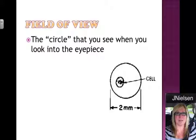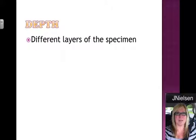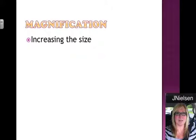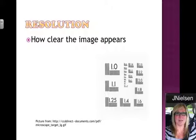The field of view is the actual circle that you see when you look through the eyepiece. Depth gives you different layers of the specimen or organism that you're looking at. Magnification means increasing the size. And resolution means how clear the image appears to you.